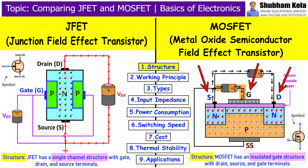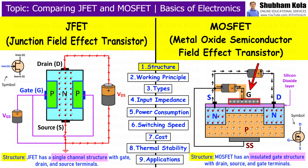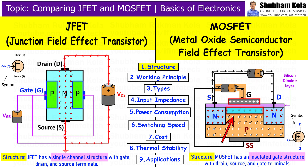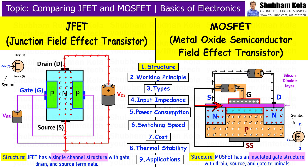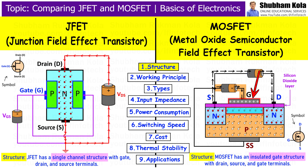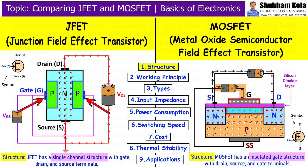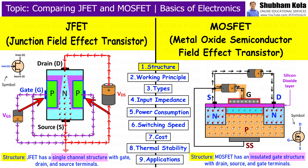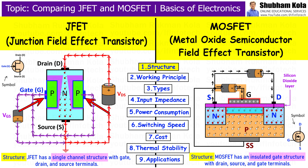In MOSFET, we also have source, gate, and drain, but the gate is insulated from the channel by a layer of silicon dioxide. This is a major difference. The gate in MOSFET does not allow current to pass through it. Unlike the gate in JFET, it just controls the flow of current using a voltage.